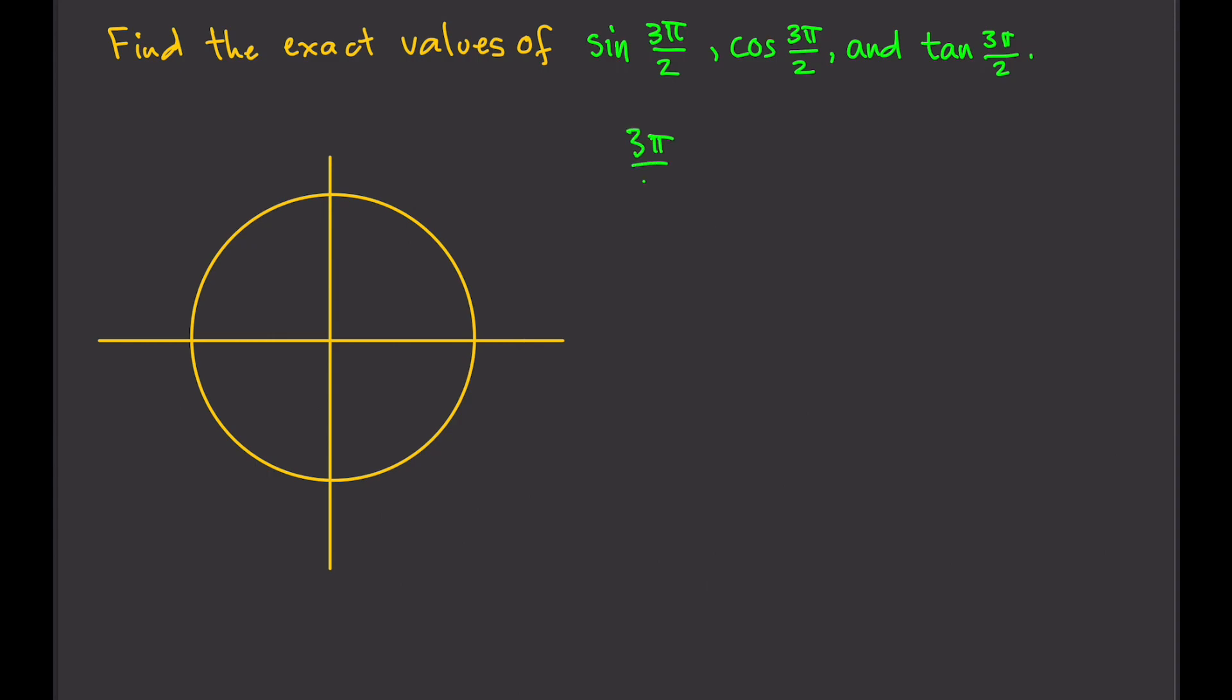So therefore, 3π/2, to convert that into degrees, we're going to multiply by 180 degrees over π. So π cancels out, that will give us 3 times 180 over 2. 180 over 2 is 90, 90 times 3 is 270 degrees. So 3π/2 is 270 degrees.